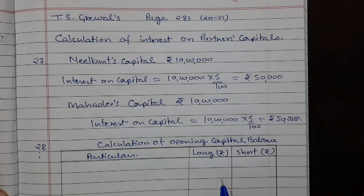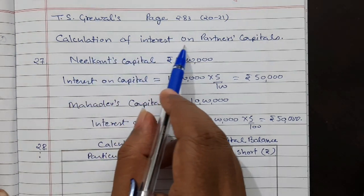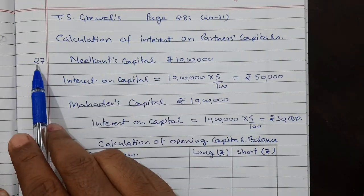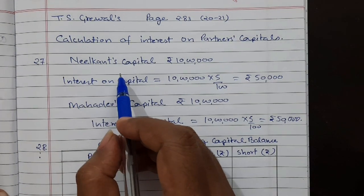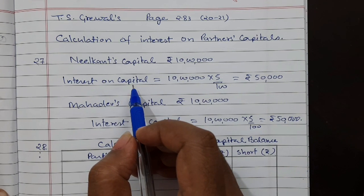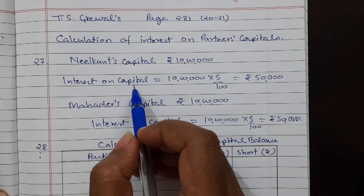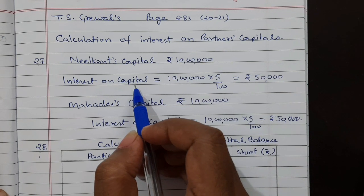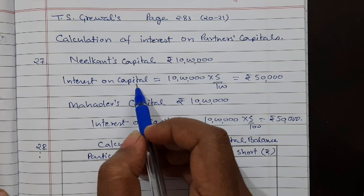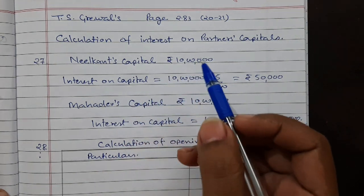Hello friends, welcome to my channel Accountancy for Sure. Today we will discuss calculation of interest on partner's capital from TS Kerewal, page number 2.83, question number 27. A balance sheet on 31st of March 2020 is given. The two partners are Neil Kant and Mahadev; their capital accounts and current accounts are given. When the current account is given, it means their capital accounts are fixed.